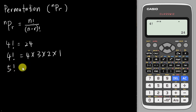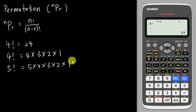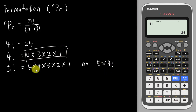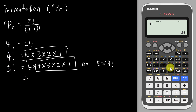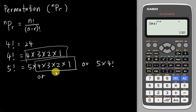For example, 5 factorial is 5 × 4 × 3 × 2 × 1, which equals 120. Alternatively, I can write 5 factorial as 5 × 4 factorial, because 4 factorial represents exactly the same remaining product. The calculator confirms 5 factorial is 120. I can also write it as 5 × 4 × 3 factorial.